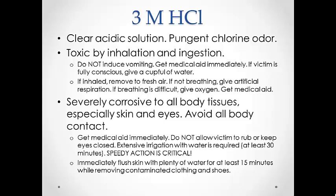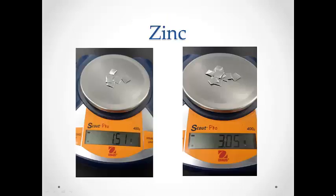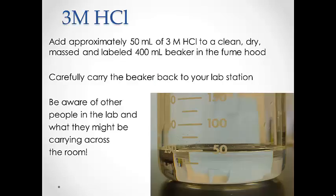You will take your beaker to the fume hood to collect your hydrochloric acid. Mass out between 1.5 and 3 grams of zinc pieces — this will end up being somewhere between 5 and 10 of the pieces given in the lab. Record this exact mass in your lab notebook. In the fume hood, add about 50 milliliters of 3 molar hydrochloric acid to your 400 milliliter beaker. Note that you need approximately 50 milliliters; you do not need to be exact, as attempting to get exactly 50 milliliters will only slow you and everyone else down.